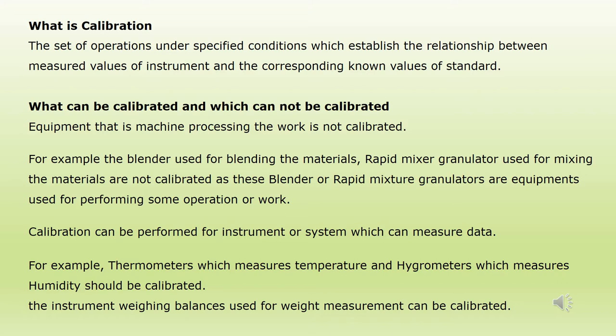What can be calibrated and what cannot be calibrated? Equipment or machines performing work are not calibrated. For example, a blender used for blending materials or a rapid mixer granulator used for mixing are not calibrated, as these are equipment used for performing operations. Calibration is performed for instruments or systems which measure data, such as thermometers which measure temperature and hygrometers which measure humidity.